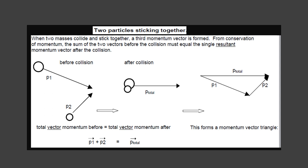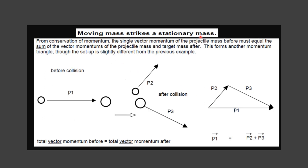In the second scenario, a moving mass strikes a stationary mass. Before collision there is a single momentum vector P1. After collision we have two momentum vectors P2 and P3. The total momentum before collision equals total momentum after collision, meaning P2 plus P3 added together should equal P1. To construct the momentum vector diagram, draw P2, add P3, and the result equals P1. This clearly shows momentum is conserved. When a momentum vector diagram is given and you are asked to show momentum conservation, you need to construct a momentum vector diagram like this.